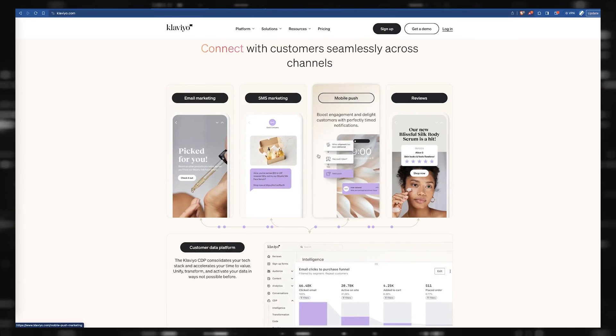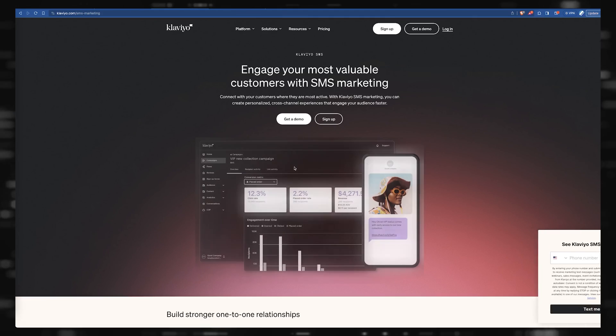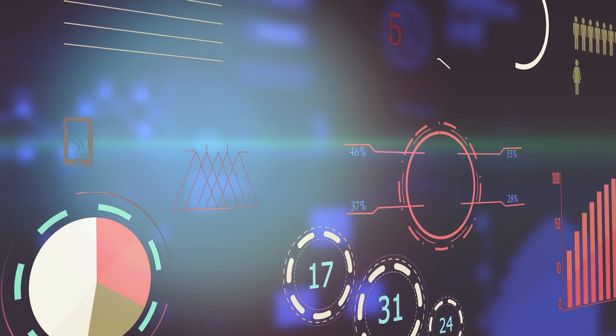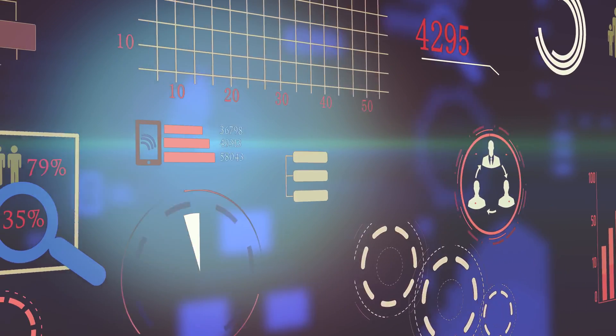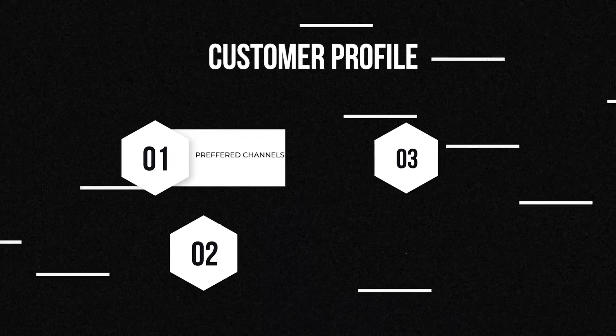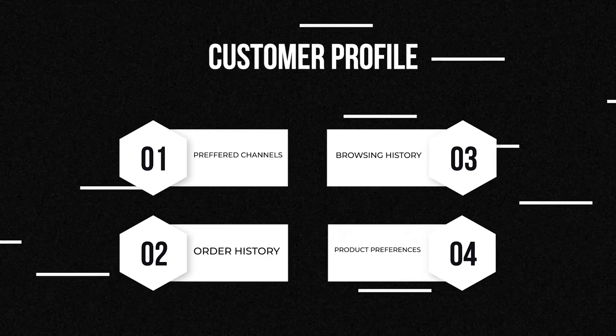Klaviyo is a really powerful tool because unlike most other ones out there, it can make a lot of automations with a really nice flow chart and path, so you can customize way more than other tools. Rather than what some people call 'batch and blast' — where you just make one email campaign and send it out to everybody — you can make much more tailored ones based on who's purchasing more, what the average spend is, and more. The app makes a complete customer profile including preferred channels, order history, browsing history, and product preferences.